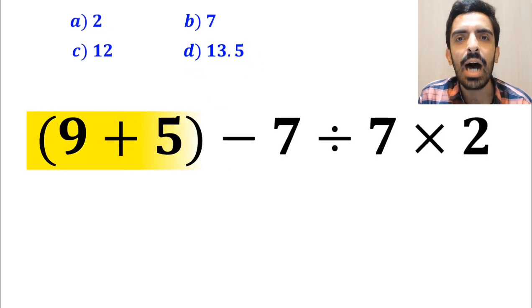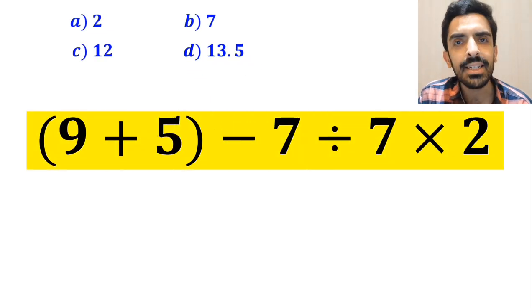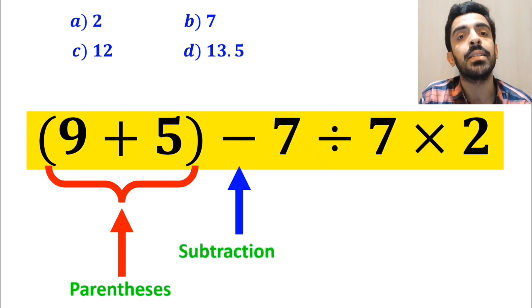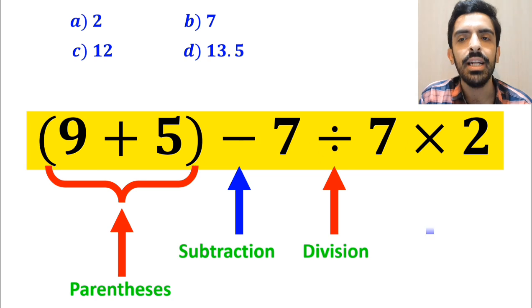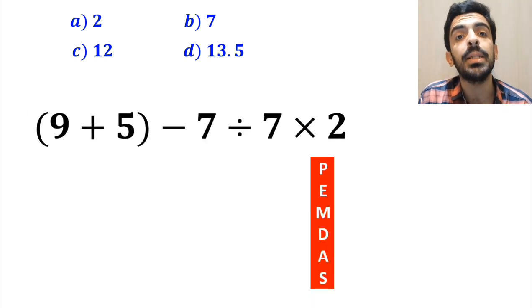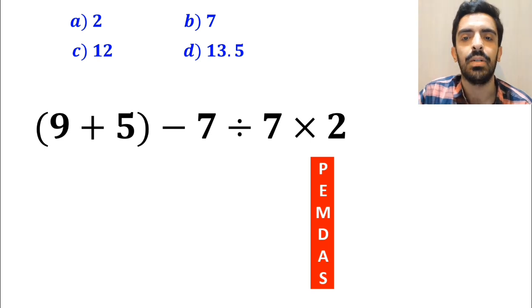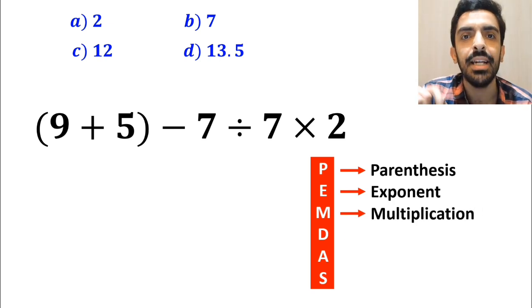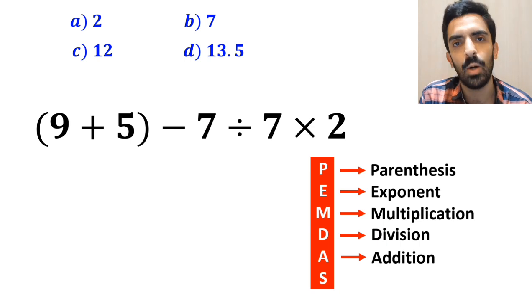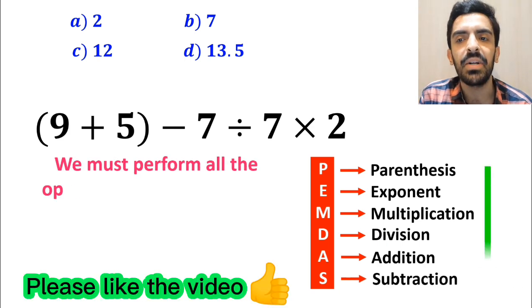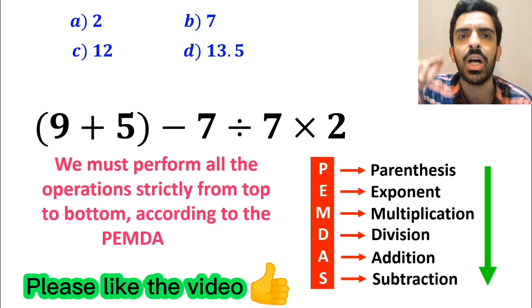Now let me show you how to solve this expression correctly. As you can see on the screen, in this expression, first we have parentheses, then a subtraction sign, followed by a division, and finally a multiplication. To solve this question, we need to follow the PEMDAS rule step by step. In this rule, P stands for parentheses, E stands for exponent, M stands for multiplication, D stands for division, A stands for addition, and S stands for subtraction. We must perform all the operations strictly from top to bottom according to the PEMDAS rule.